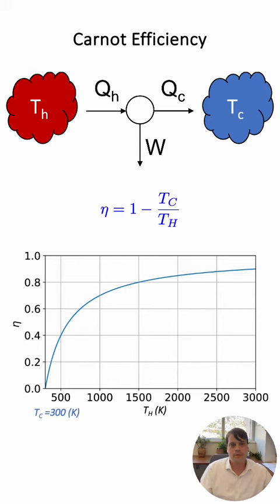If we plot the efficiency as a function of the hot temperature for a given cold temperature and we will take the cold temperature to be ambient 300 Kelvin then this is the efficiency plot that we get. So the efficiency increases significantly from about 40 percent when you have 500 Kelvin as the hot reservoir to 80 percent when the hot reservoir is 1500 Kelvin.